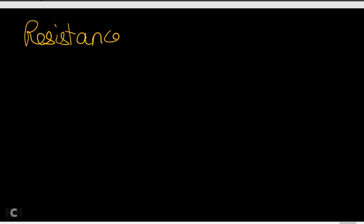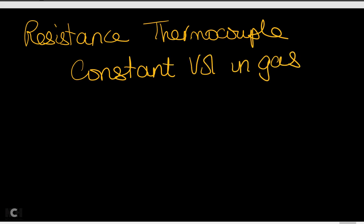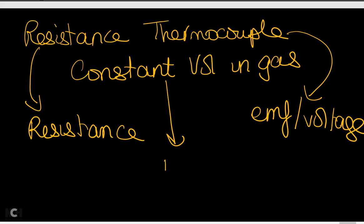There are other types of thermometers: the resistance thermometer, the thermocouple, and the constant volume gas thermometer. The resistance thermometer uses resistance as its thermometric property, the thermocouple uses a variation in EMF or voltage, and the constant volume gas thermometer uses a change in pressure.